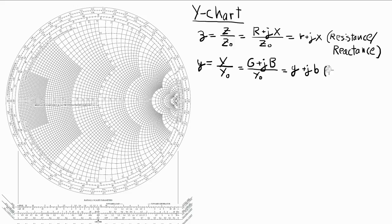Resulting in the normalized admittance little g plus j little b, where little g is the conductance, or the real part of the admittance is called the conductance and the imaginary part is called the susceptance.